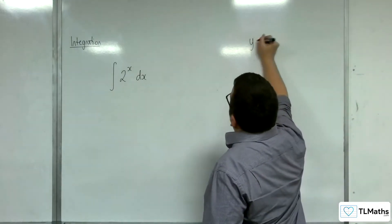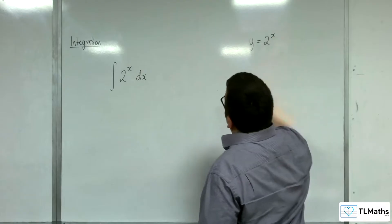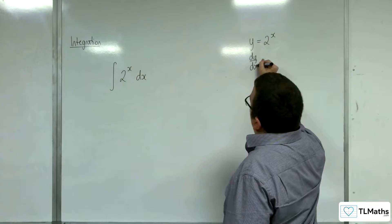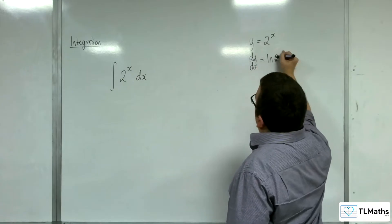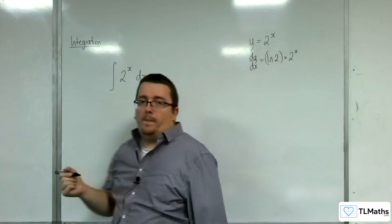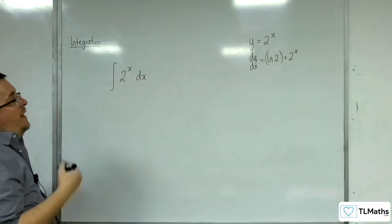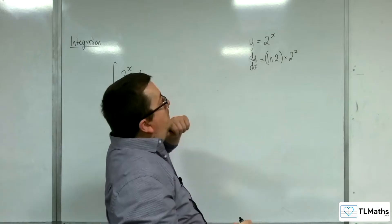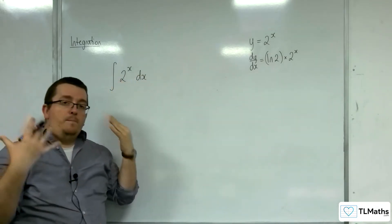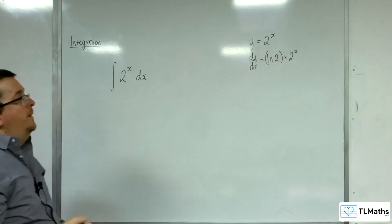So y equals 2 to the x. Now, what that differentiates to is log of 2 times 2 to the x. Okay, now that can be shown using taking logarithms to both sides and using implicit differentiation.